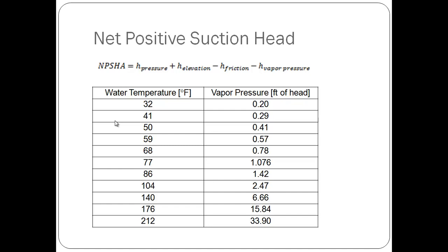NPSHA is equal to the head pressure which is simply sea level or 33.9 feet of head, plus our elevation difference which was given to us as 10 feet of head, minus our friction loss which was given as 15 feet of head,